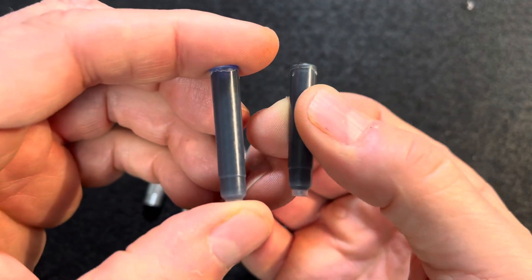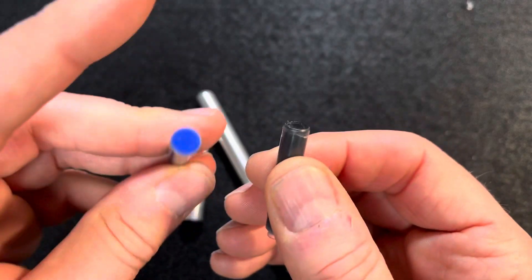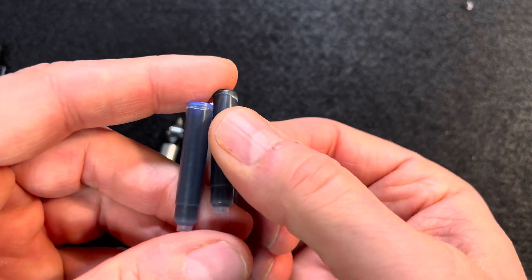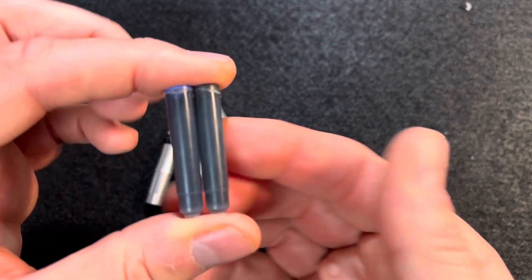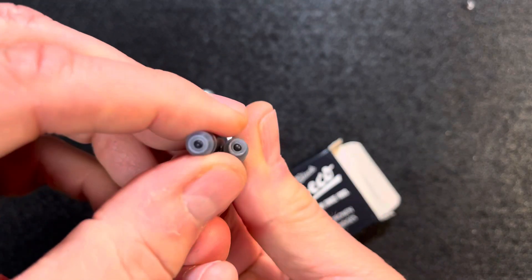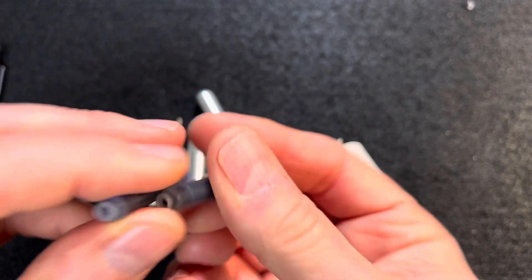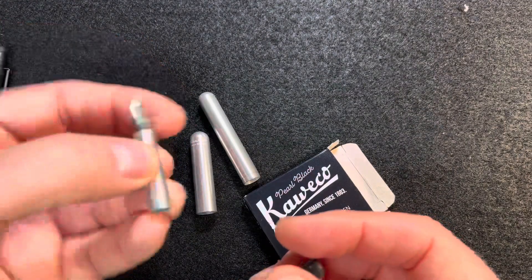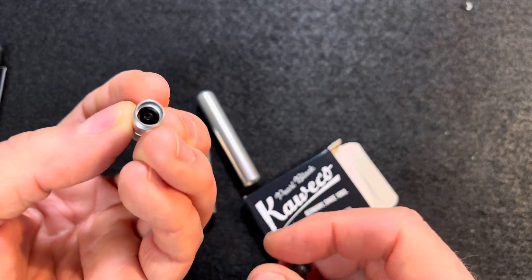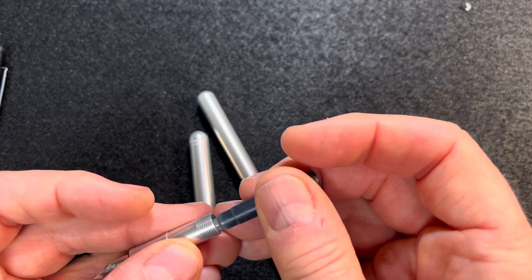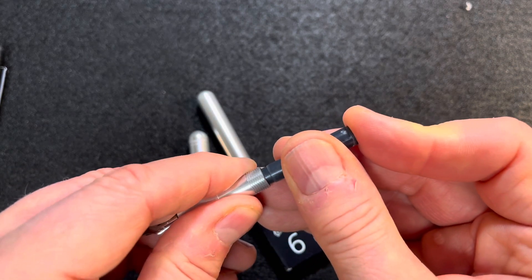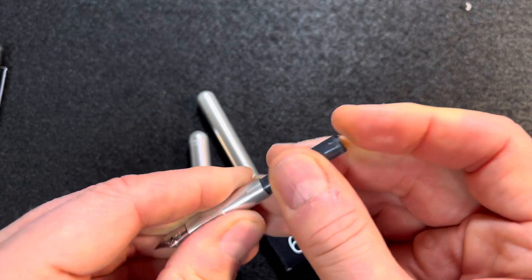So here are the cartridges it takes. This blue ink came with it and there's a black one. And you just puncture the end with a little tube in there.